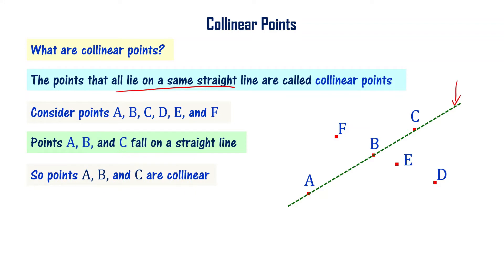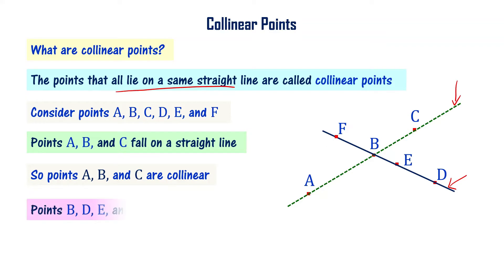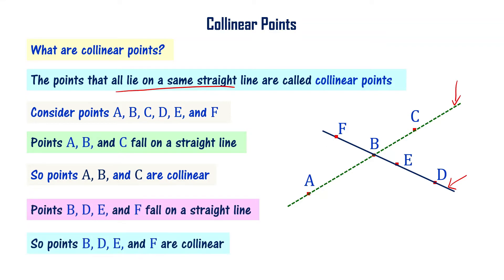Now, if I draw another line that passes through E, D and others — you see, on this particular straight line, we have points B, D, E and F. That is why we say that B, D, E and F are collinear points.